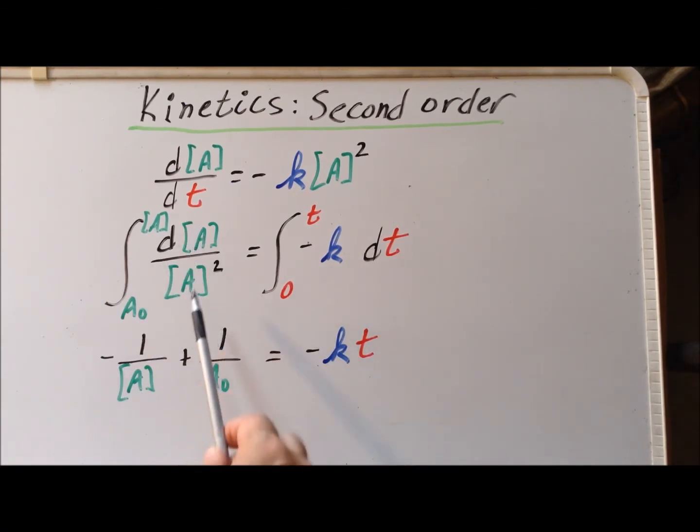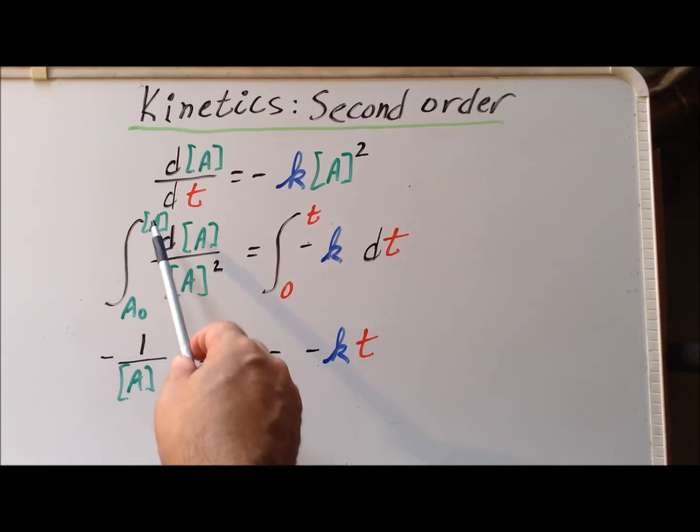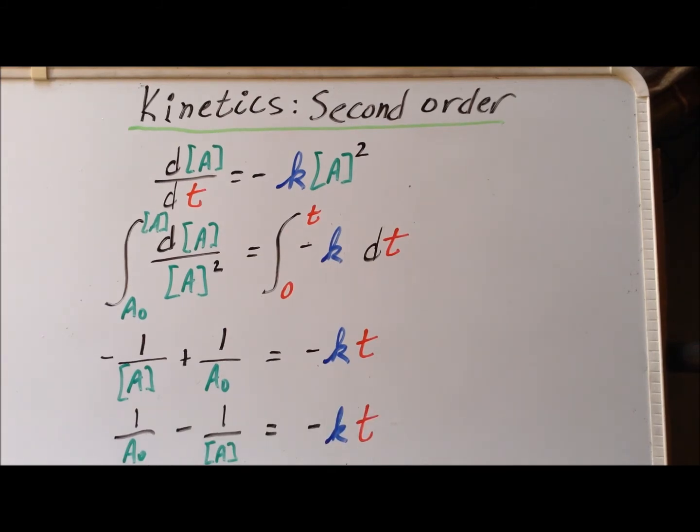The antiderivative for 1/x² is -1/x. So if we apply that at the limits, we get -1/[A] plus, we have minus and minus, 1/A₀, and then the right-hand side is -kt because t equals 0 at one of the endpoints. Slightly rearranging the left-hand side, we get that 1/A₀ - 1/[A] equals -kt. So this is a convenient integrated form of the rate law for a second-order reaction.